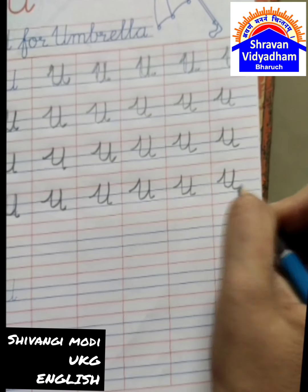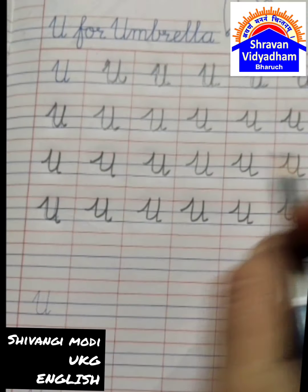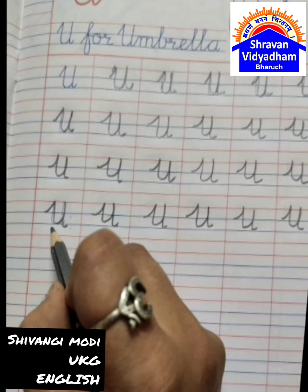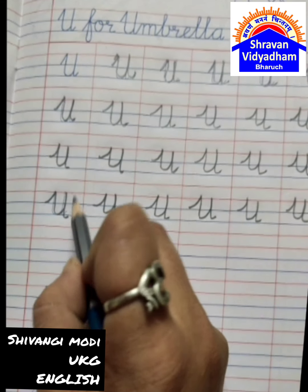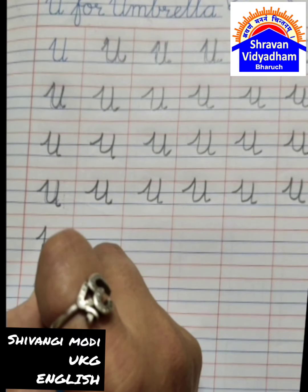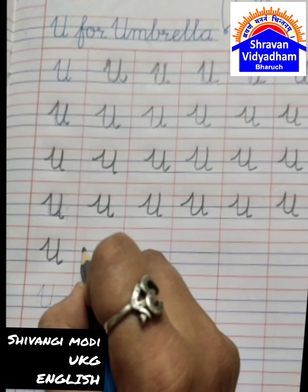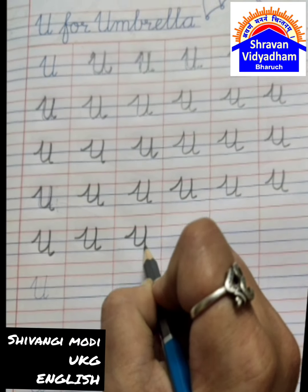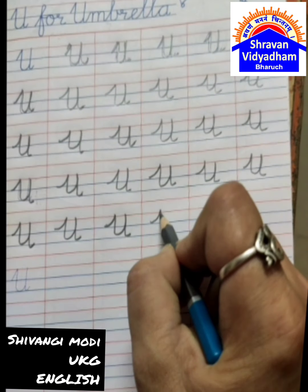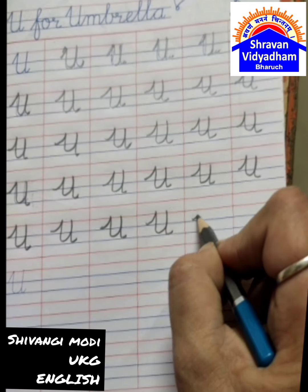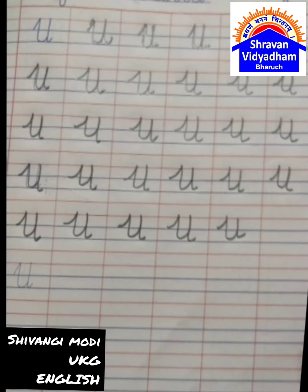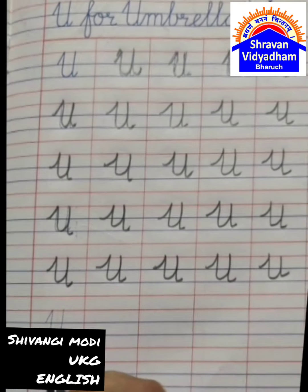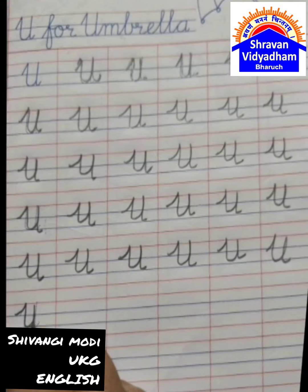In cursive writing, U for Umbrella is written in two lines. But the capital cursive letter U is written on three lines — red line to blue line. Finish the whole page like this with proper three-line writing.